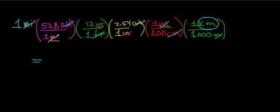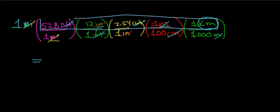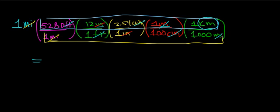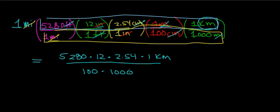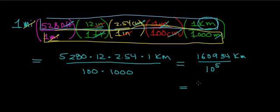Now I need to multiply all the numbers in the numerator and divide by all the numbers in the denominator. That gives us 5,280 times 12 times 2.54 times 1, all divided by 100 times 1,000. This equals 160,934 divided by 10 to the 5th. Dividing 160,934 by 10 to the 5th gives approximately 1.609 kilometers.